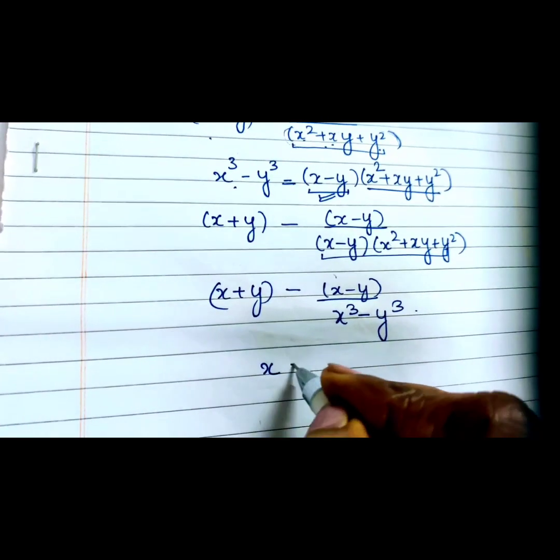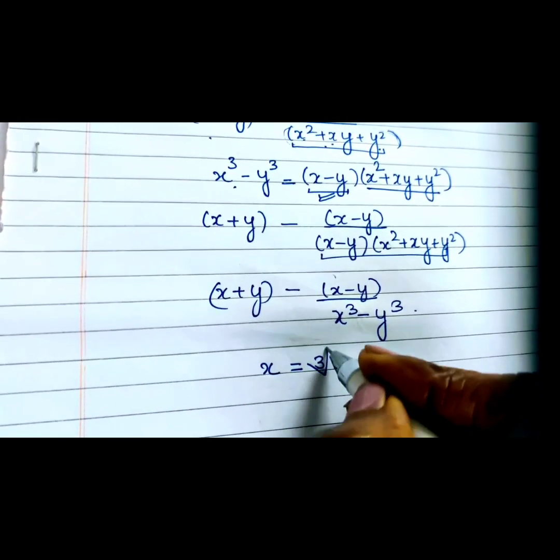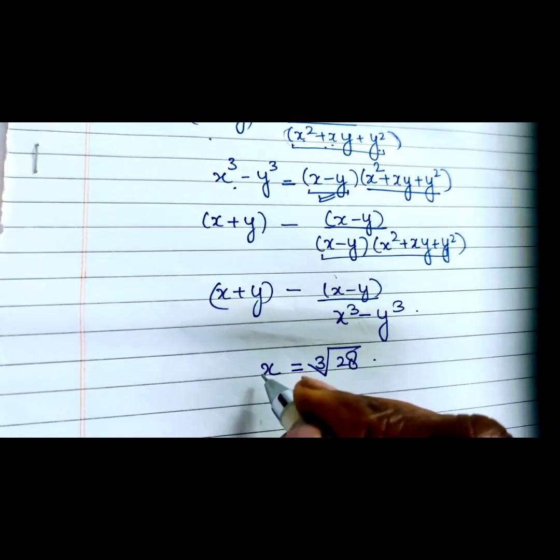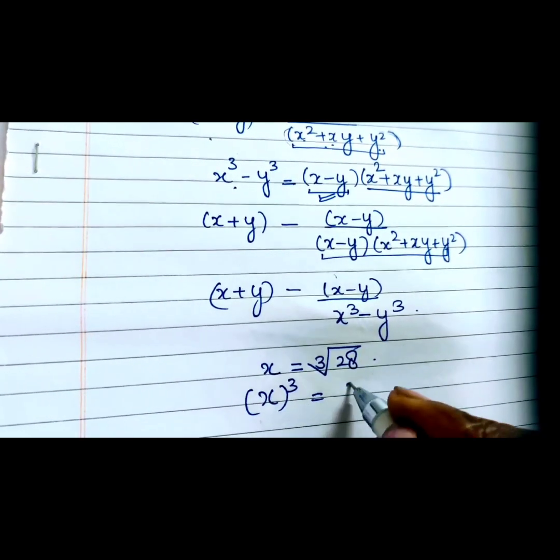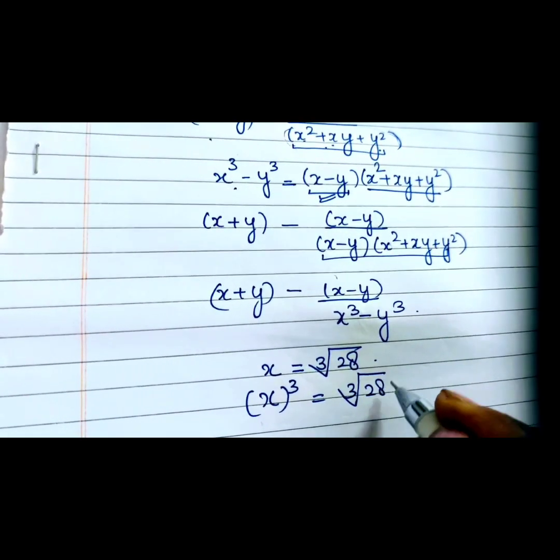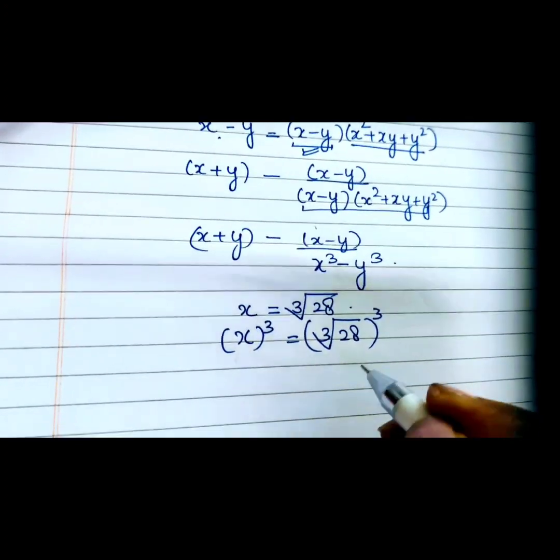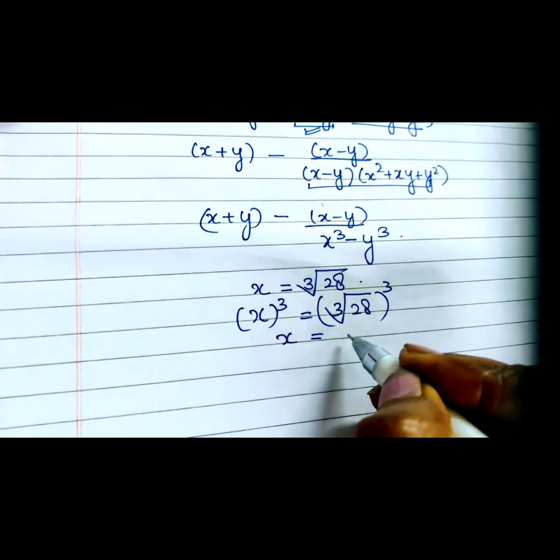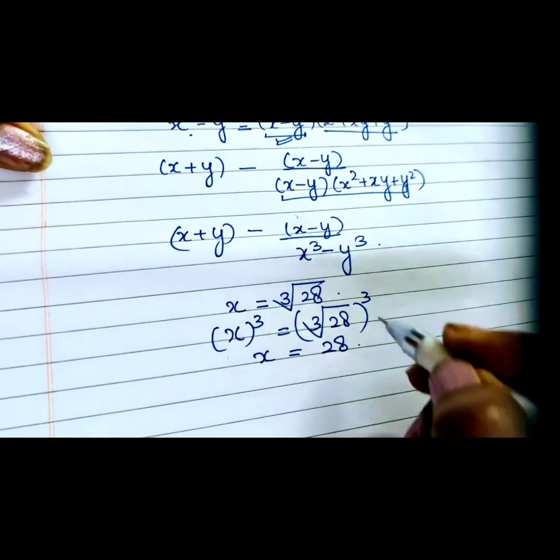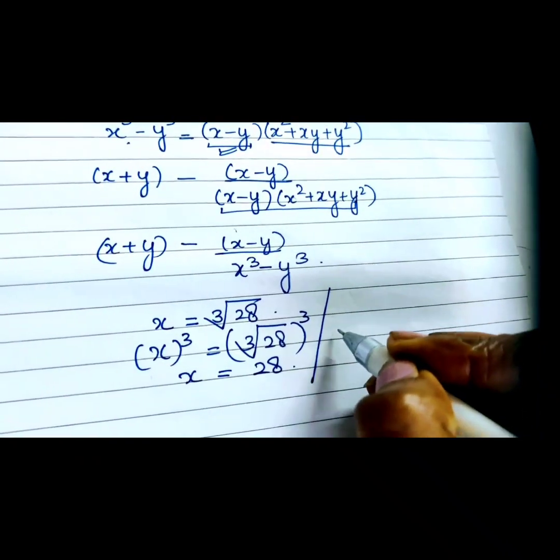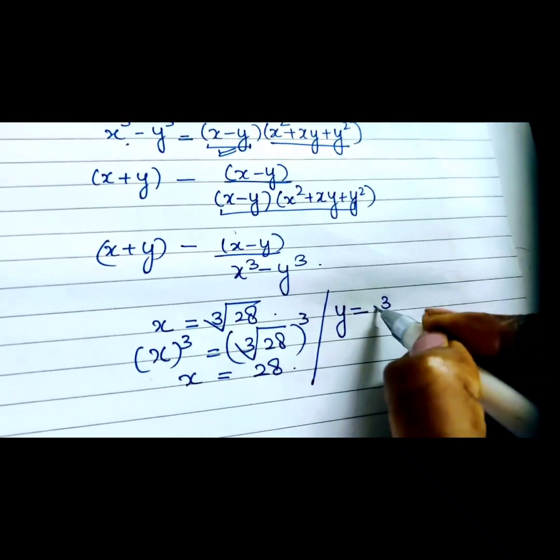values. x was given to us as the cube root of 28, so if we take cube on both sides, x³ will become 28. Similarly,